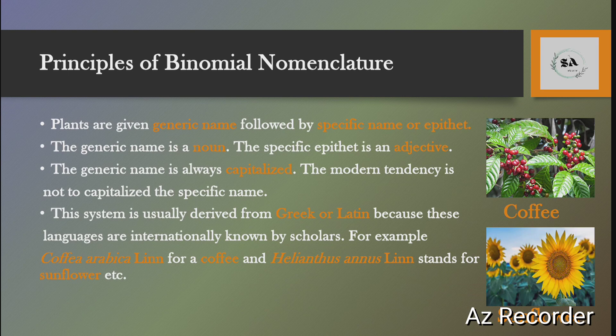The next topic is the principles of binomial nomenclature. First, plants are given a generic name followed by a specific name or epithet. The generic name is a noun, and the specific name or epithet is an adjective. Third rule: the generic name is always capitalized, and specific names are not capitalized according to modern tendency. Fourth rule: the system is derived from Greek or Latin language, and both these languages are regulated by international authority and are known by scholars.